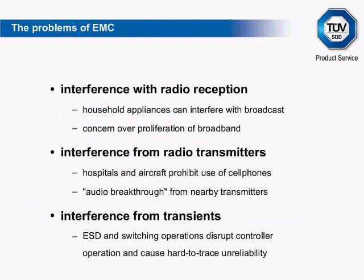EMC is a somewhat arcane discipline and most members of the general public are unaware of its implications or how it is achieved. But its failures can often be seen in the daily operation of electronic products — for example, a Freeview cable box that halts every time a microwave oven is used, with the screen blocking up and freezing. Broadly, there are three areas of concern: interference to radio reception, interference from radio transmission, and interference from transient and power-related phenomena. The first has been subject to regulation since the 1930s, culminating in the EMC directive last revised in 2004.